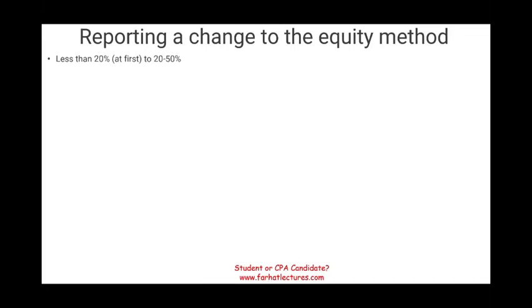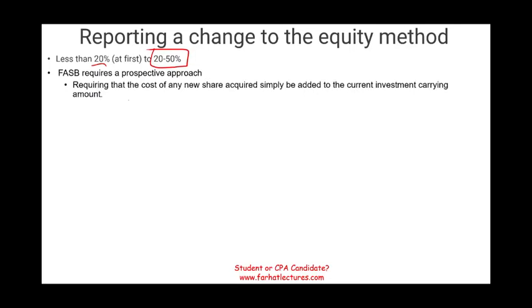Starting with reporting of change to the equity method: you might start with less than 20% when you first invest in a company, then add more to reach a point where you own between 20 to 50%. Once you own 20 to 50%, the equity method will kick in. FASB requires a prospective approach — meaning you don't have to go back and change prior years. You take whatever you did up to that point and start using the new equity method going forward. The cost of the new investment is simply added to the current investment carrying amount.